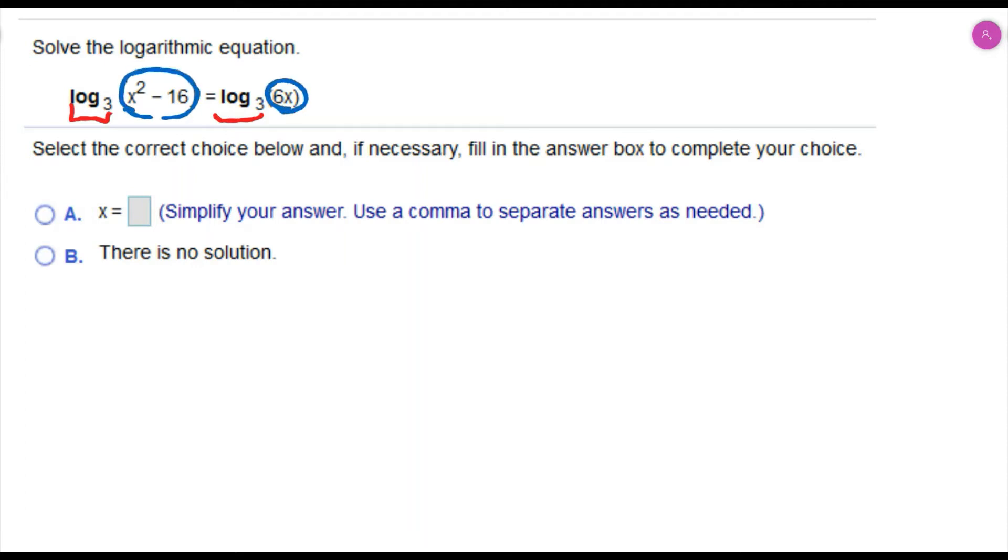So that simplifies our equation to be x squared minus 16 equals 6x. This is a quadratic equation, so I'll move all the terms to the same side, giving me x squared minus 6x minus 16 equals 0.